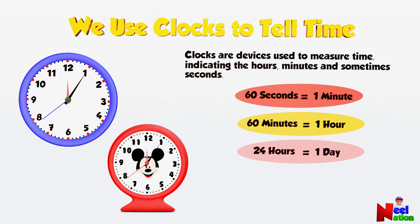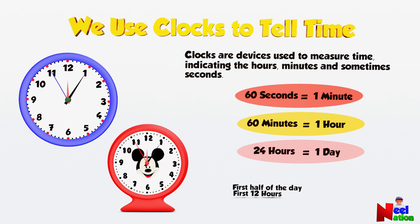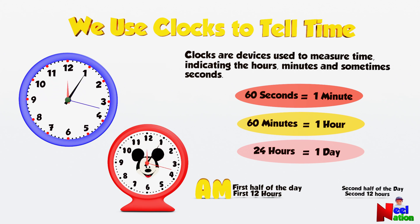One day can be divided into two equal halves of 12 hours each. We use AM to tell time in the first half of the day. We use PM to tell time in the second half of the day.